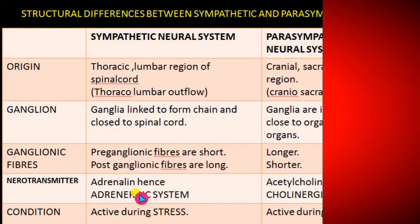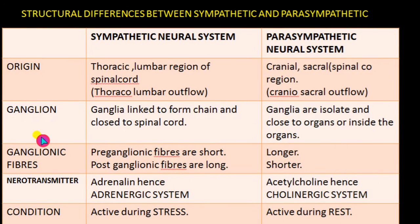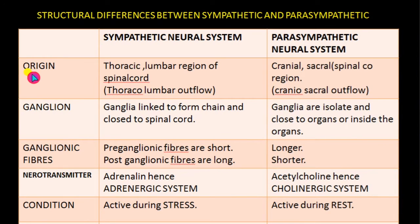Hit the bell icon so that you are notified every time I post a new lesson. Today let us discuss about the structural differences between sympathetic and parasympathetic neural systems. Comparing the origin, the sympathetic neural system arises from the thoracic and lumbar regions of the spinal cord.